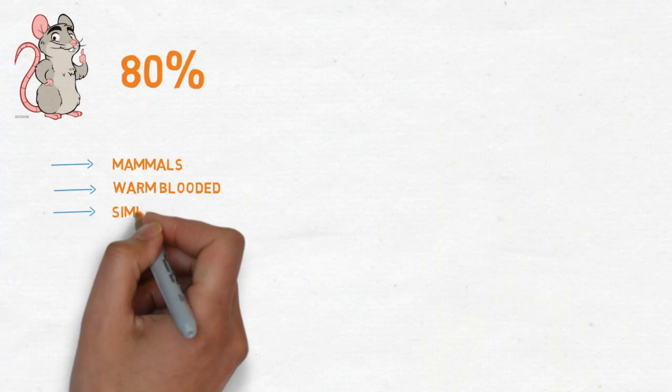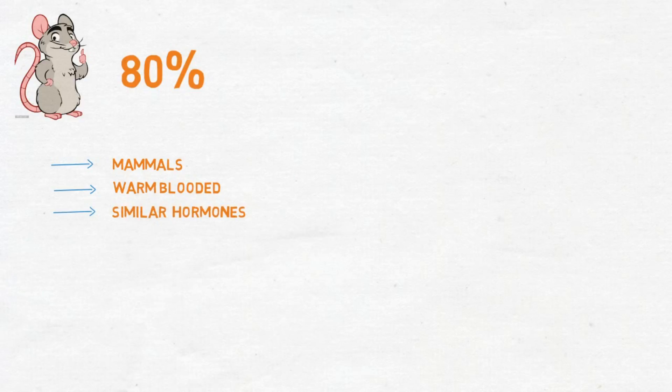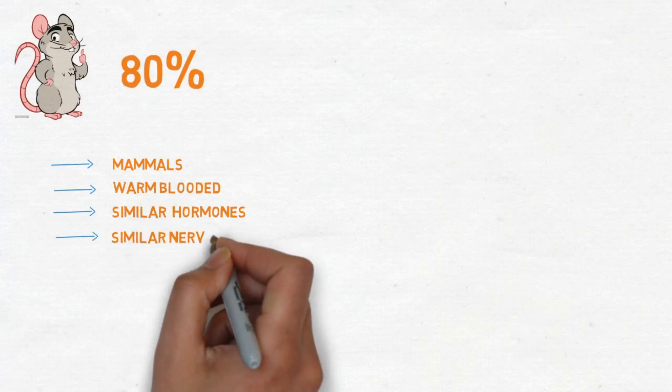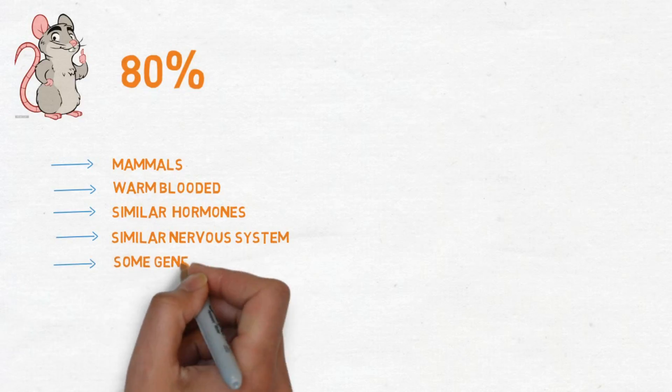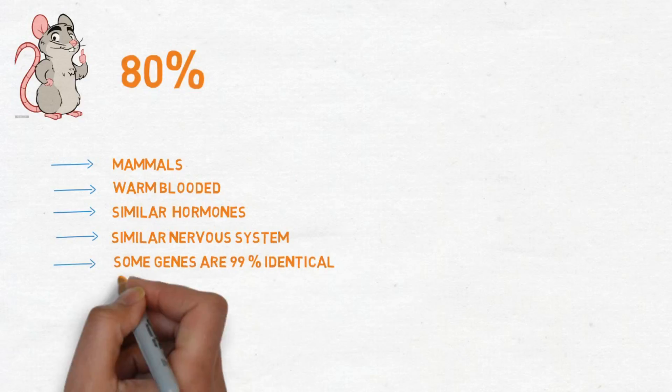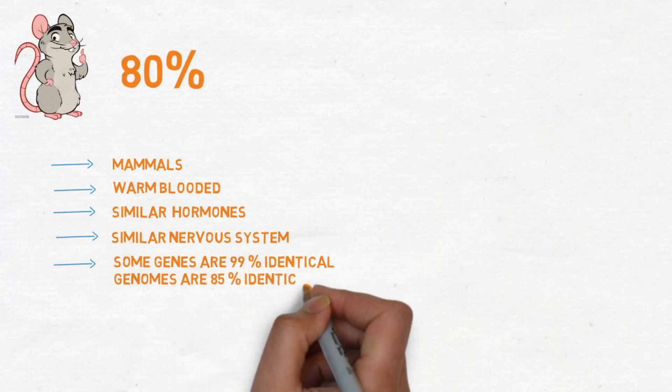We both control our body chemistry using similar hormones, we both have nervous systems that work in the same way, and we both react similarly to infection and injury. Mice are widely considered to be the best model of inherited human disease and share 99% of their genes with humans.